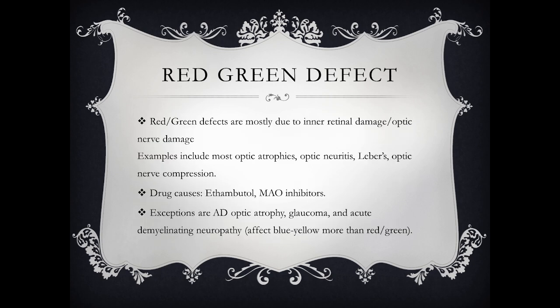Red-green defects are mostly due to inner retinal damage or optic nerve disease. Examples include most optic atrophies, optic neuritis, Leber's optic neuropathy, optic nerve compressions, and common drugs such as the anti-tuberculosis drug ethambutol and monoamine oxidase inhibitors.